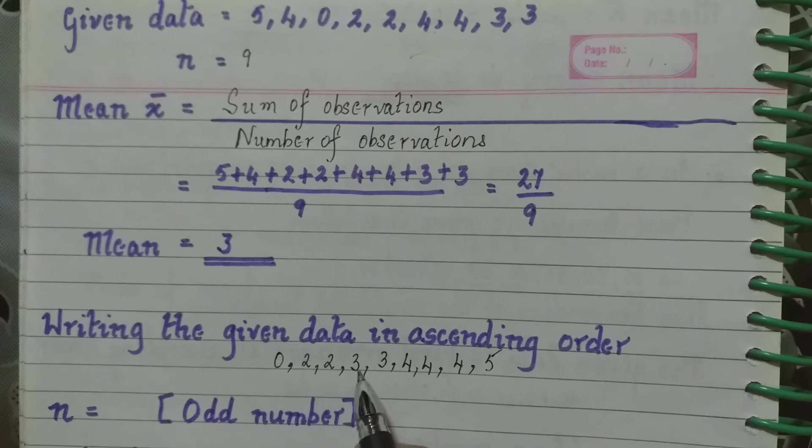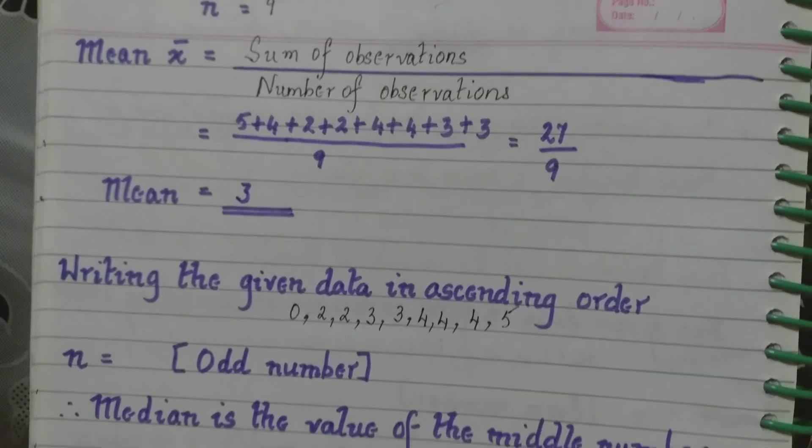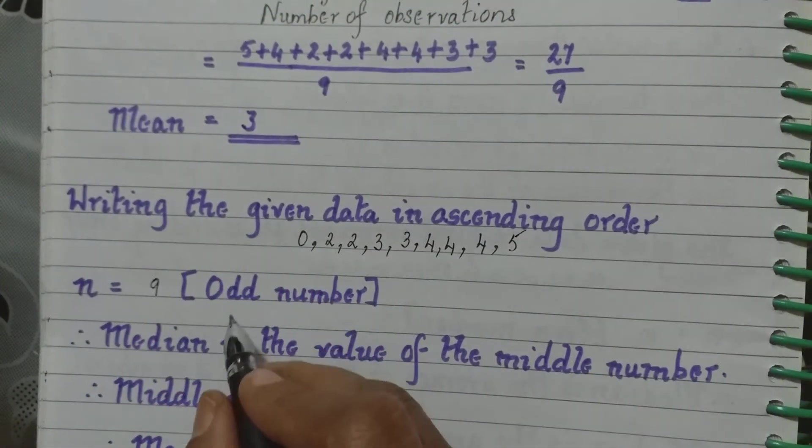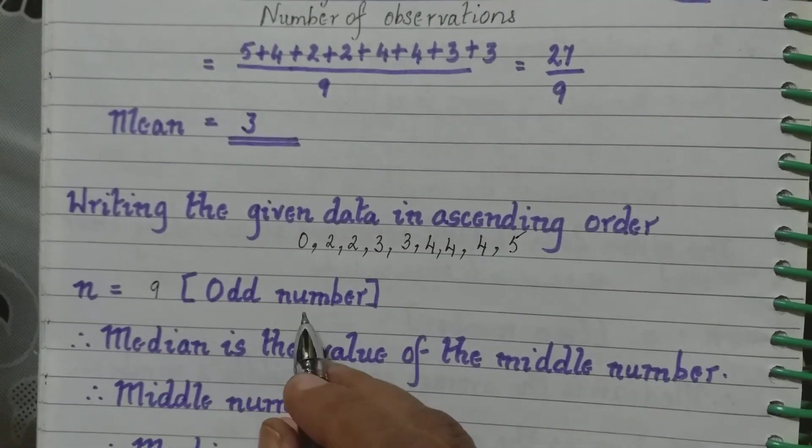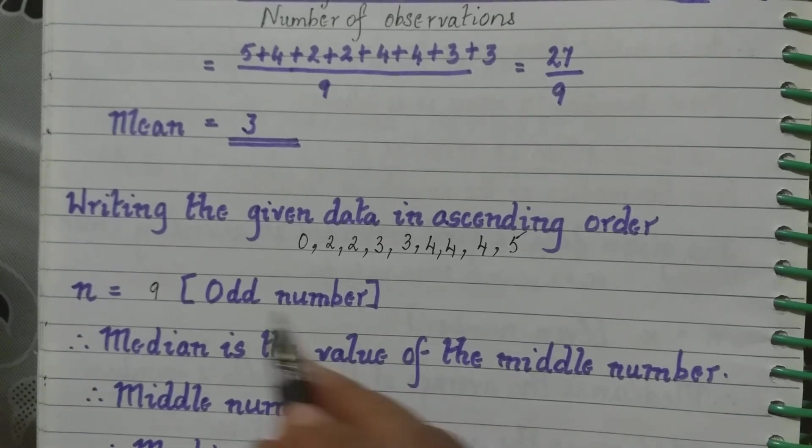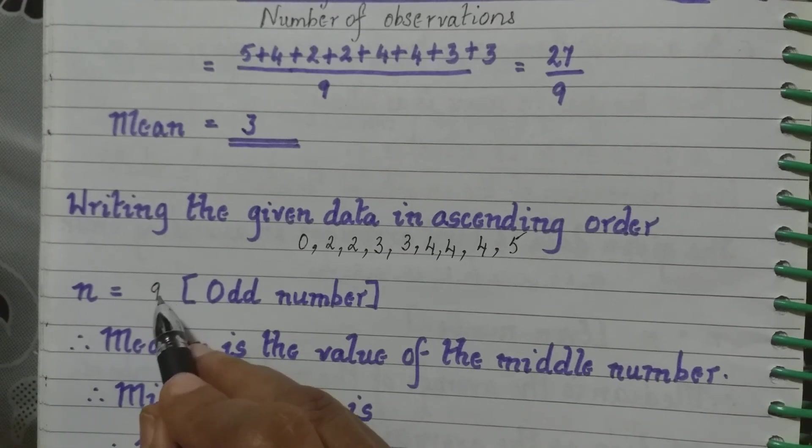We have 9 observations. So n equals 9 which is an odd number. So if it is an odd number, how do we find the median? It is the value of the middle number. How to get the middle number? We add 1 to n, that is 9 plus 1, that is 10, and then divide by 2.